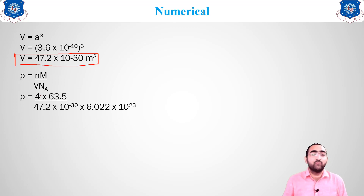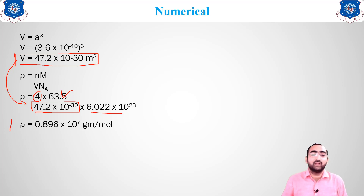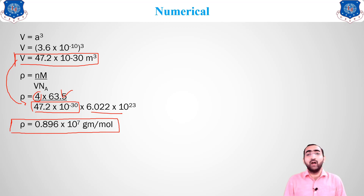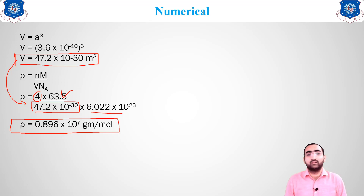Now placing all values in the density formula ρ = nM / (V · Nₐ): n = 4 atoms per unit cell (FCC), M = 63.5, V = 47.2 × 10⁻³⁰ m³, and Nₐ = 6.023 × 10²³. Calculating gives density = 0.896 × 10⁷ g/mol. This is how from given data we can find different properties of the crystal structure.